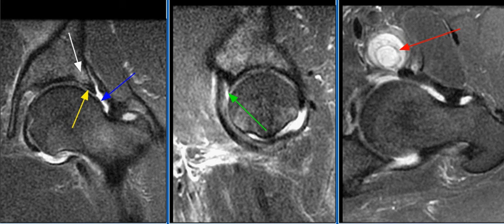A 60-year-old male with history of left hip pain. MRI examination shows moderate joint effusion. The iliopsoas bursa is distended with synovial thickening and proliferation, consistent with bursitis.